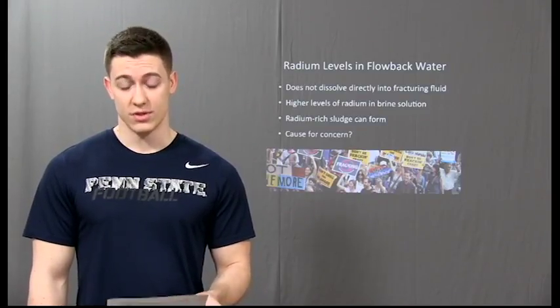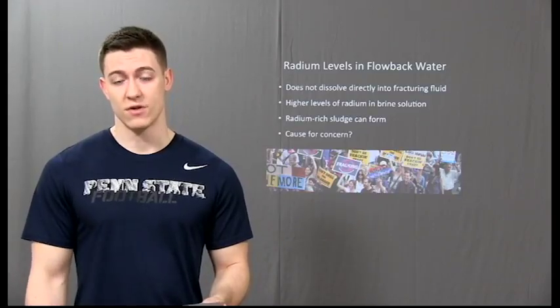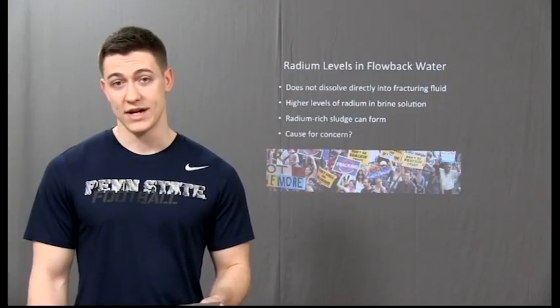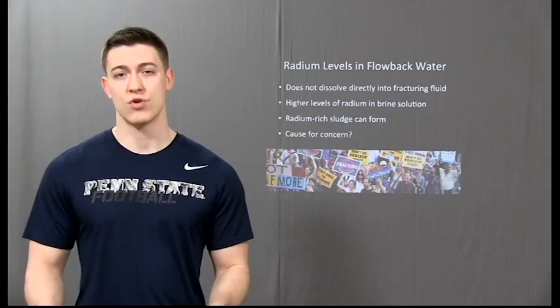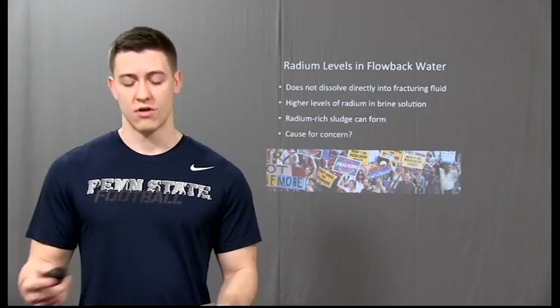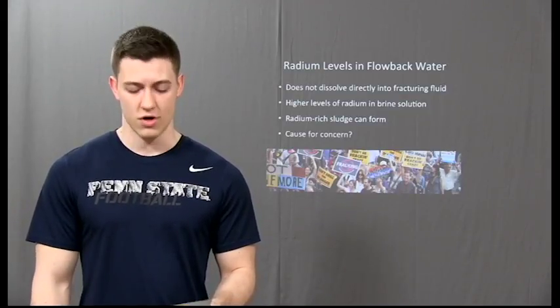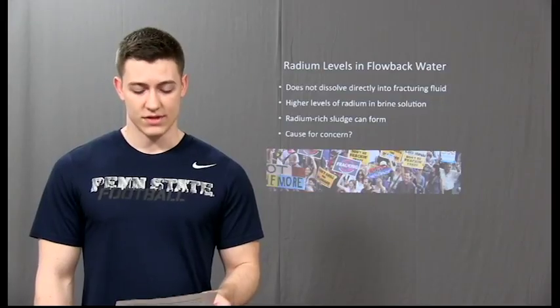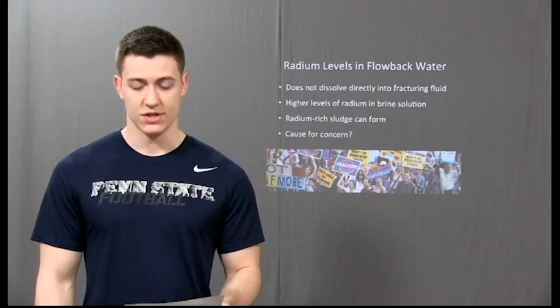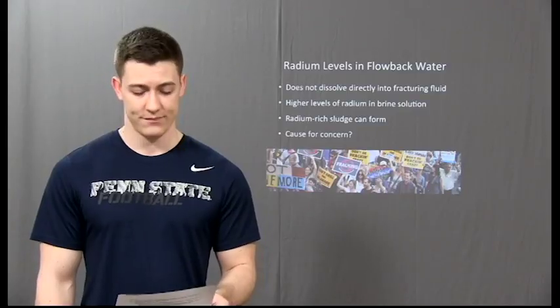The radium levels are negligible to begin with, but repeated use of this flowback water can result in the formation of radium-rich sludge because the proportion of the brine in the flowback water grows continually over time as it's used over and over again. This sludge is a result of radium co-precipitating from the solution with barium sulfate.